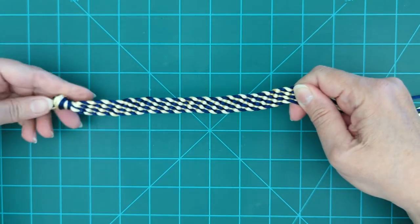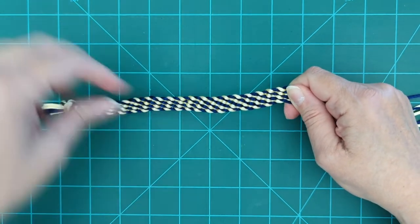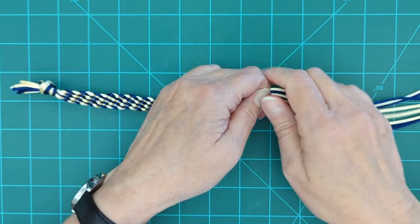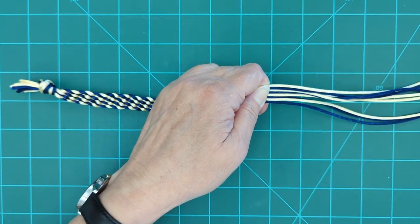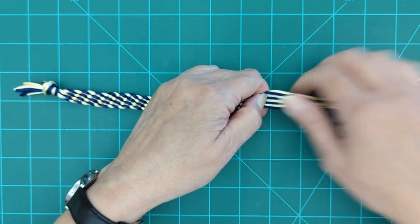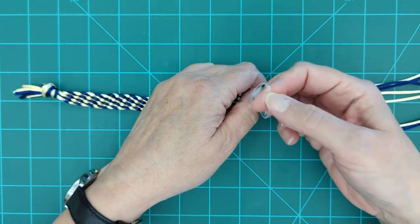Now there are various ways you can finish this off. You could get clasps, you can knot it off. Because this is rat tail and it is so smooth, I find knots to be very difficult with this because they just don't stay very well. So that's where our little elastic bands are going to come in.